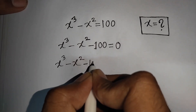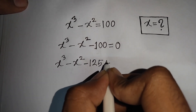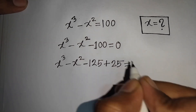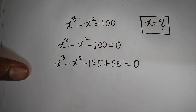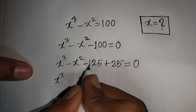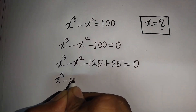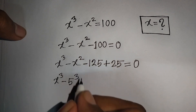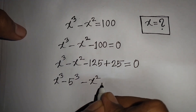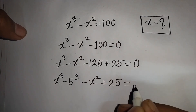Minus 100 can be written as minus 125 plus 25, so that equals 0. Now we have x³, then minus 125 can be written as minus 5³, then minus x² plus 25, equals 0.